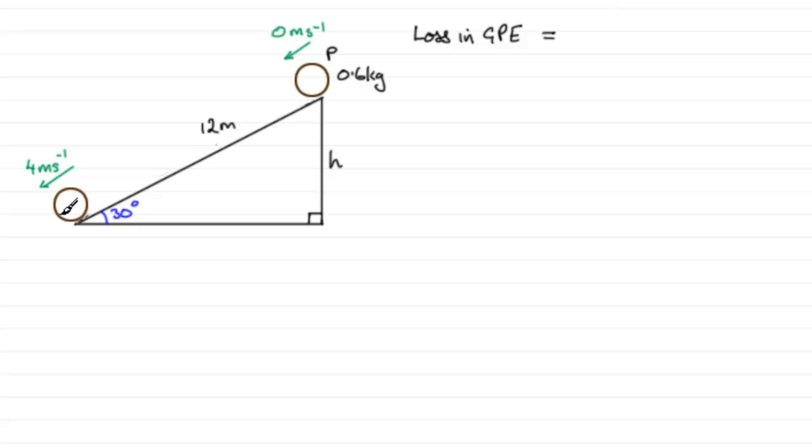So we're going to work out mgh. To get h, we need to do basic trigonometry from this right angle triangle. We should know that the sine of 30 degrees equals the opposite side, which is h, over the hypotenuse, which is 12. So that's going to be h over 12. If we multiply both sides by 12, we end up with h equaling 12 times the sine of 30 degrees. The sine of 30 degrees is a half, so 12 times a half is going to give us 6 meters for the height h.